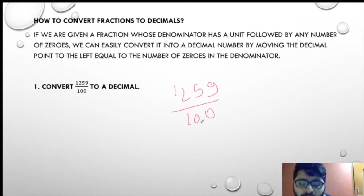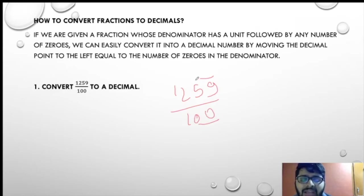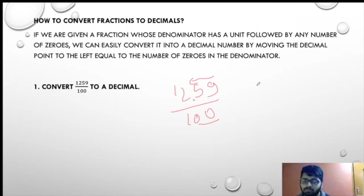Now we have to convert 1259 upon 100 to decimal. How many zeros are there? Two zeros. So I will go two numbers to the left. I go to the first number: 9, then 5. I will go to the left and place the point. My answer is nothing but 12.59.